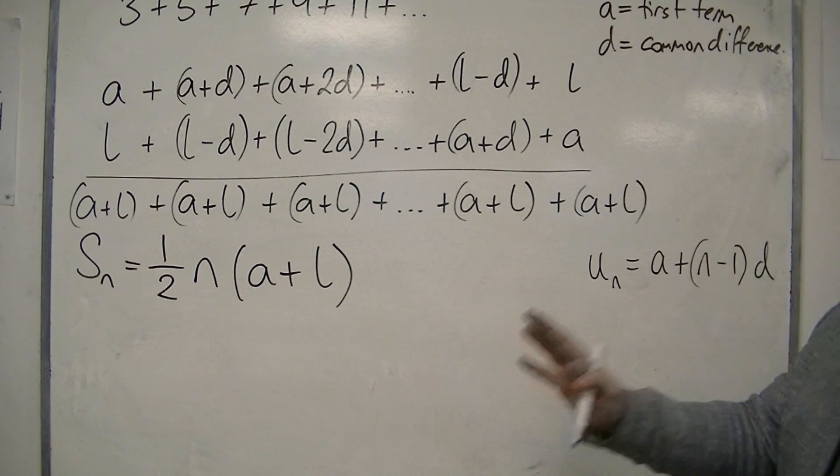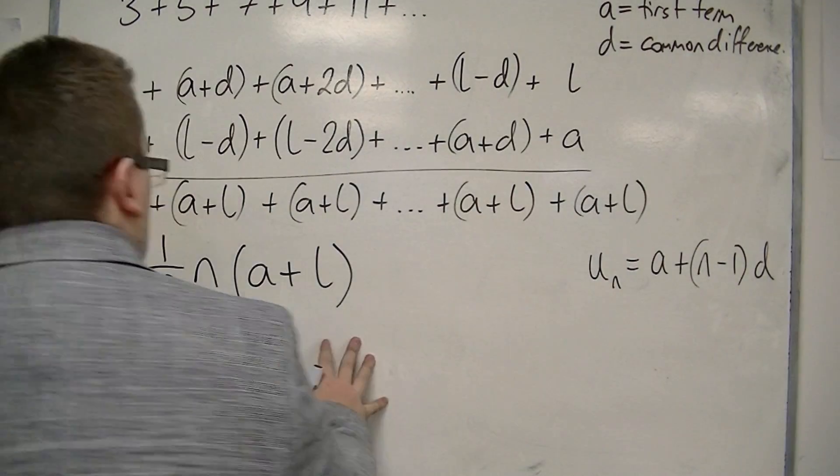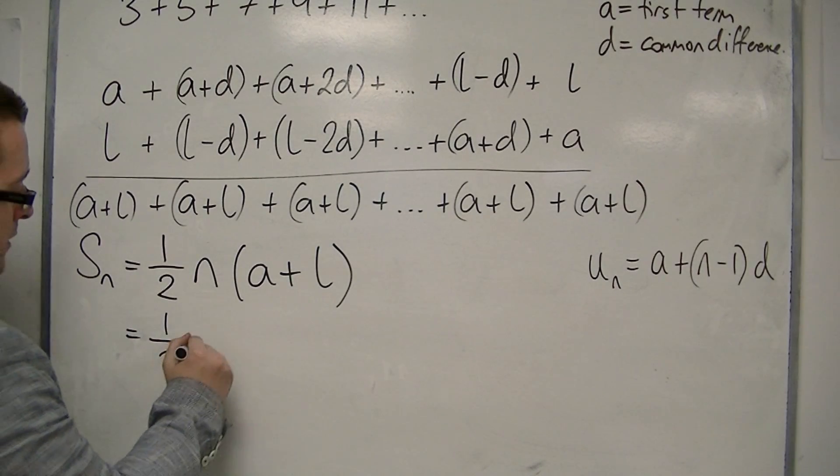And that was A plus N minus 1D. So we could call L the nth term, the last term in the sequence, and replace the L with A plus N minus 1D. So let's do that.